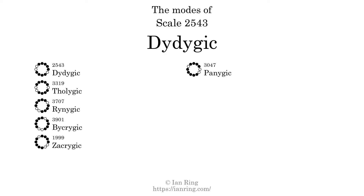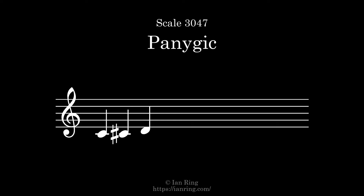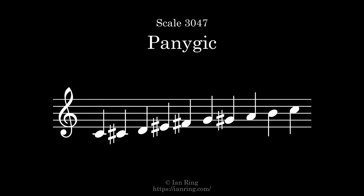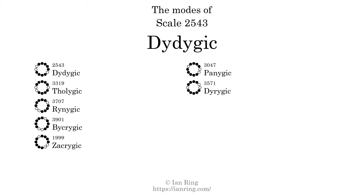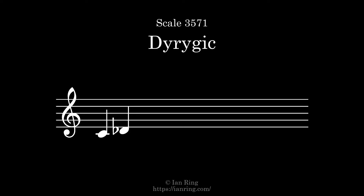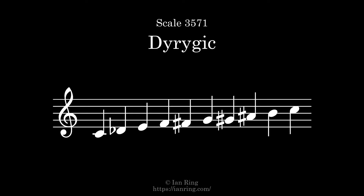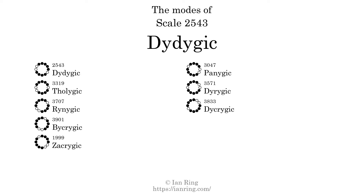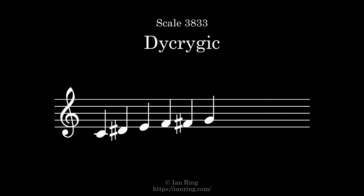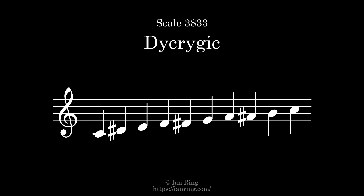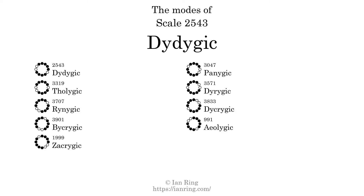The 6th mode is scale 3047, also known as Penijic. It sounds like this. The 7th mode is scale 3571, also known as Dirijic. It sounds like this. The 8th mode is scale 3833, also known as Dirijic. It sounds like this. The 9th and last mode is scale 991, also known as Dirijic. It sounds like this.